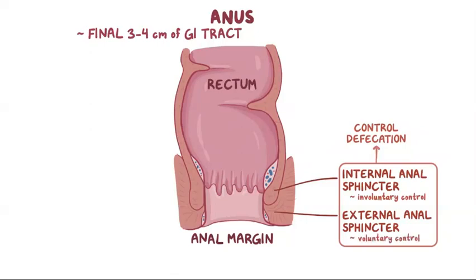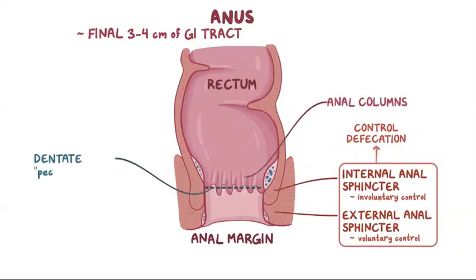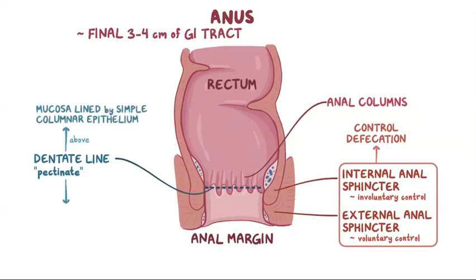Within the anal canal, there are mucosal membrane infoldings that form the anal columns. At the base of these columns, there's the dentate or pectinate line, which divides the upper two-thirds and lower third of the anal canal. Above the dentate line, the mucosa is lined by simple columnar epithelium, and below the dentate line, there's the anoderm, which has no hair and no sebaceous and sweat glands, and is lined by squamous epithelium.